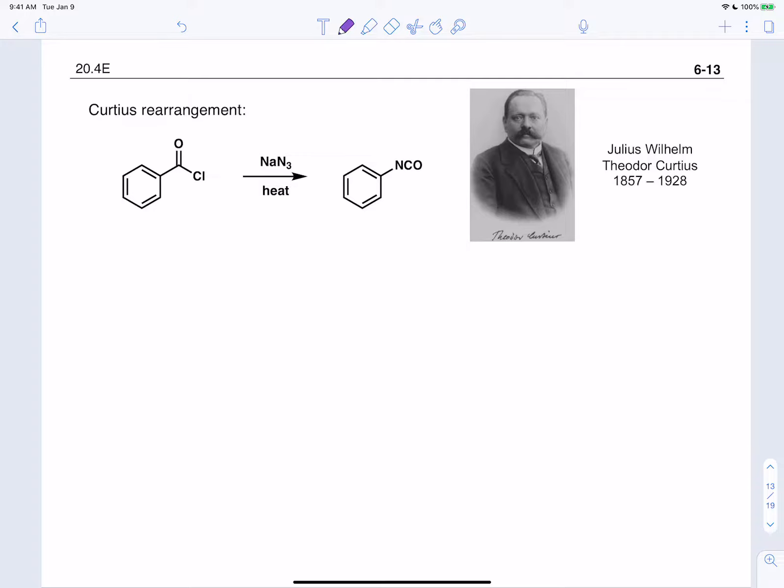The next reaction we're going to learn is called the Curtius rearrangement, and the Curtius is quite curious because you can see we initially start with an acid chloride where you have a carbon attached to this phenyl ring, and this carbon somehow becomes a nitrogen. So it certainly tells us that we have some rearrangement take place.